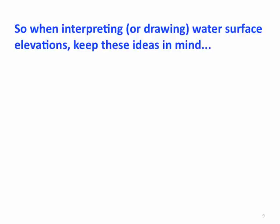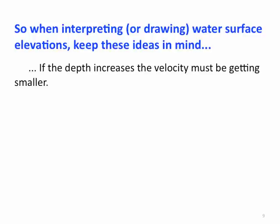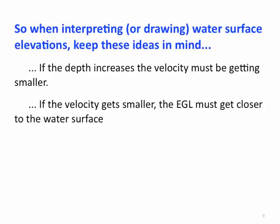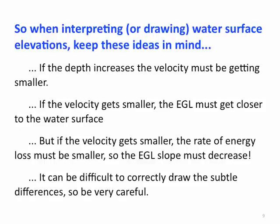So when you're interpreting or drawing water surface elevation, keep these ideas in mind. If the depth increases, the velocity must be getting smaller. If the velocity gets smaller, the energy grade line must get closer to the water surface. But if the velocity gets smaller, the rate of energy loss must also be smaller. So the EGL slope must be decreased. It can be difficult to correctly draw the subtle differences, so be very careful.